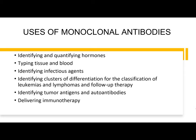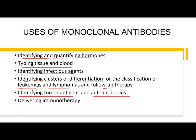The uses of monoclonal antibodies include: identifying and quantifying hormones, typing tissue and blood, identifying infectious agents, identifying clusters of differentiation for the classification of leukemia and lymphomas and follow-up therapy, identifying tumor antigens and autoantibodies, and delivering immunotherapy. That ends your module. Thank you.